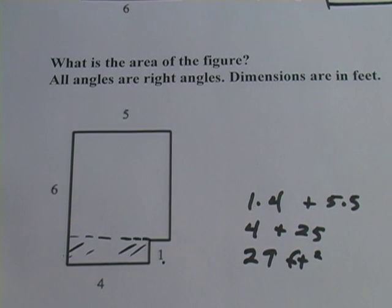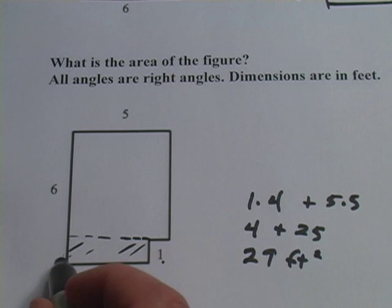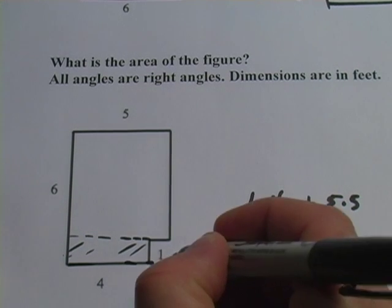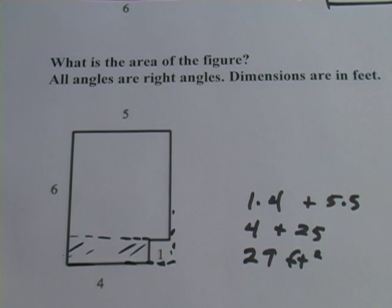Another way to think about this one, though, is that it looks like a big rectangle with only one little bite taken out of it. So I could figure out what the dimensions would be of the bigger rectangle that would include that bite and then subtract that bite.